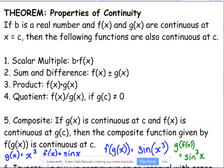Let's talk about some properties of continuity. If b is a real number, a constant, and f(x) and g(x) are continuous at x equals c, then the following functions are also continuous at that point c.